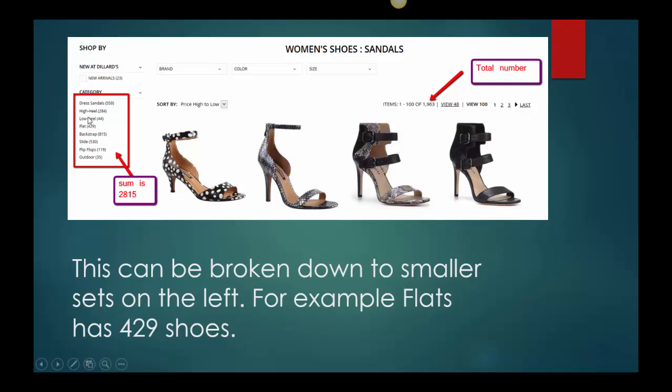So that says how many elements are in each of those sets. How many low heels do they have? 44. How many high heels? 284. So this tells me how many elements in each of these sets. Instead of specifically listing all of them, I can just tell you the cardinality, and that's what this is doing. Anytime they tell you this number, it's how many elements are in that set.